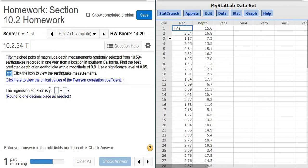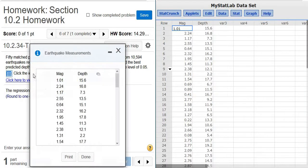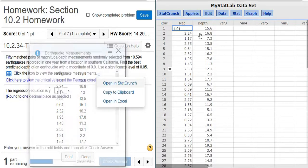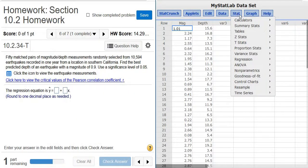Okay, part A, we want the regression equation. So after everything is in here, again you click this, click this, click open in StatCrunch, you go to Stat, Regression, Simple Linear.